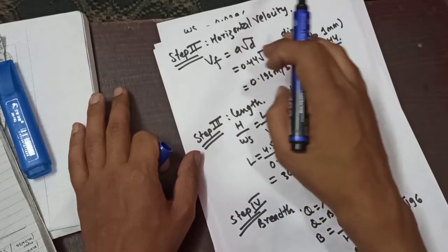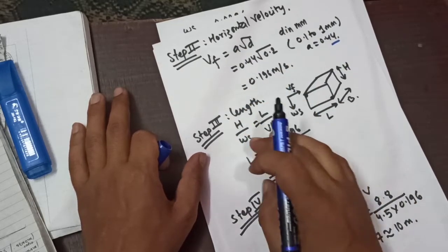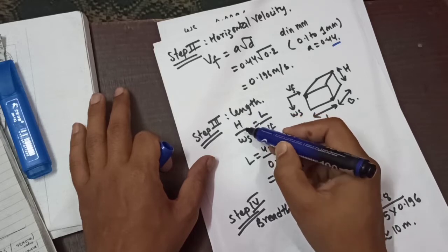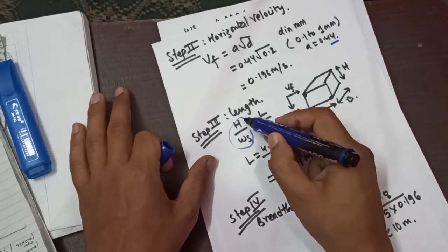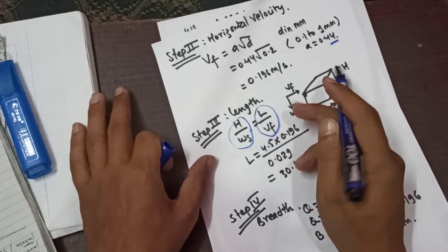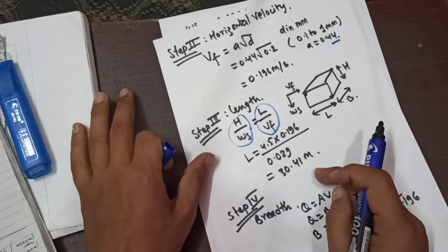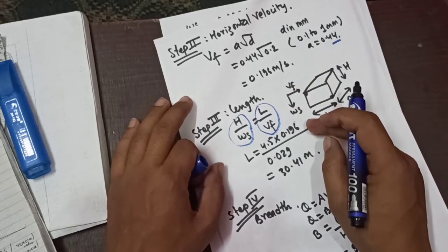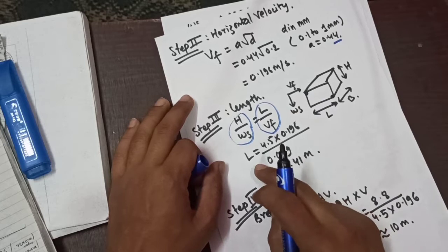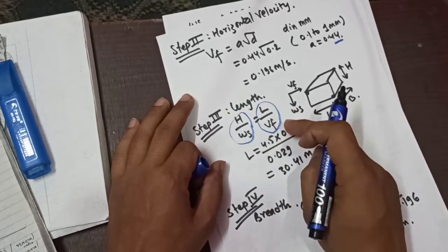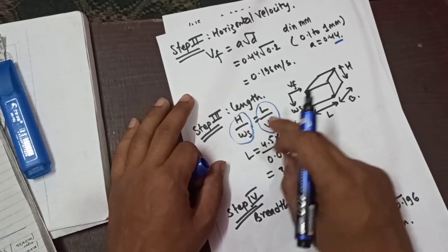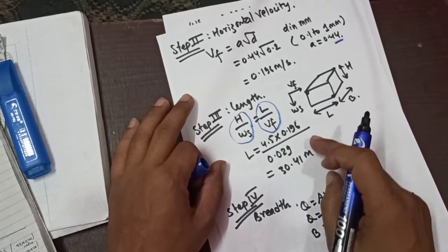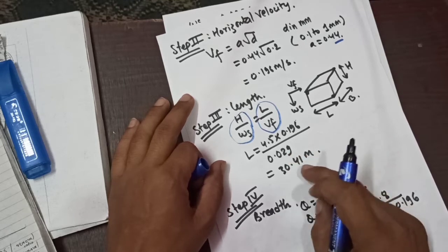Next, the length is defined by the formula L = H × Vf / Ws. With H = 4.5 m, Vf = 0.196 m/s, and settling velocity Ws = 0.029 m/s, the calculated length L = 4.5 × 0.196 / 0.029 = 30.41 meters.